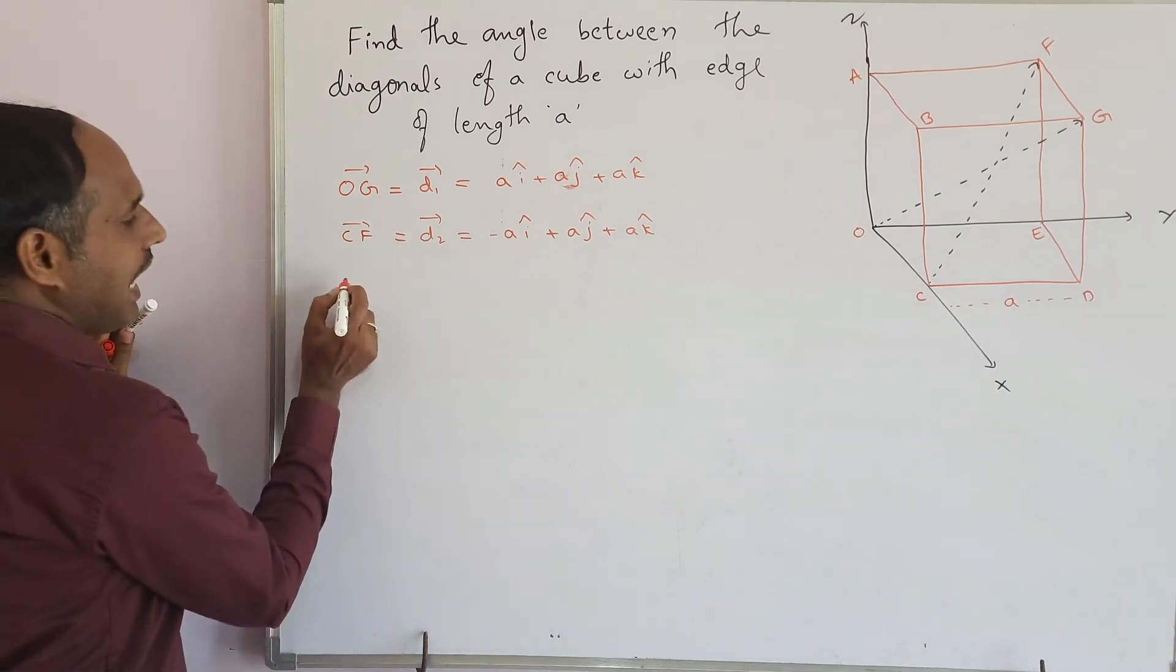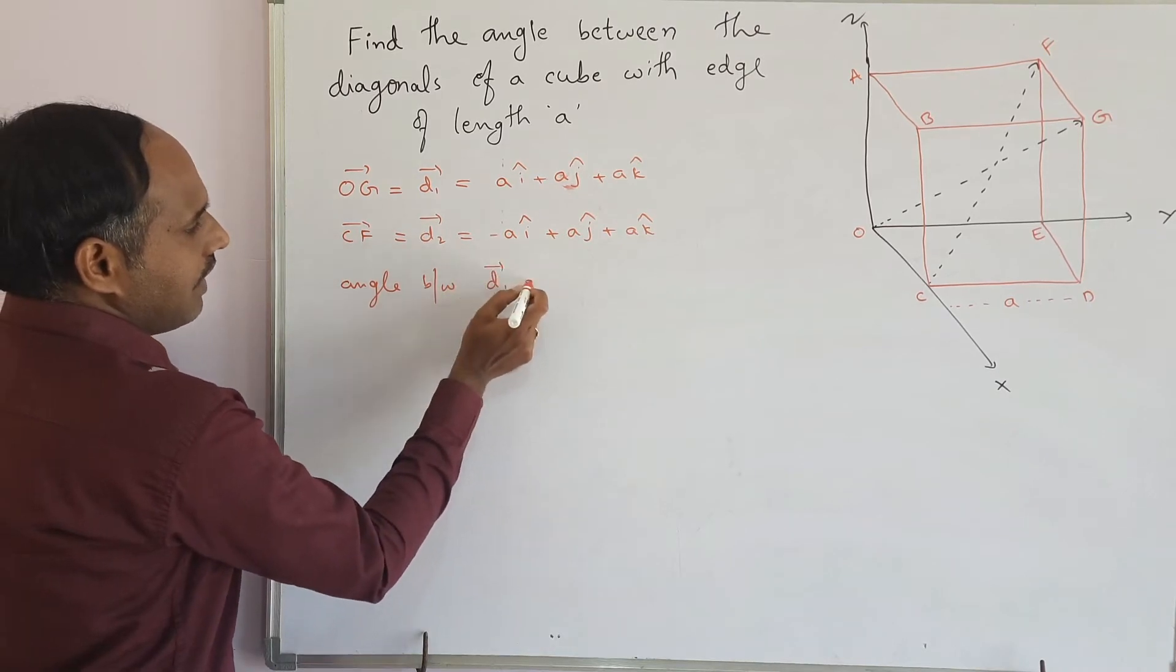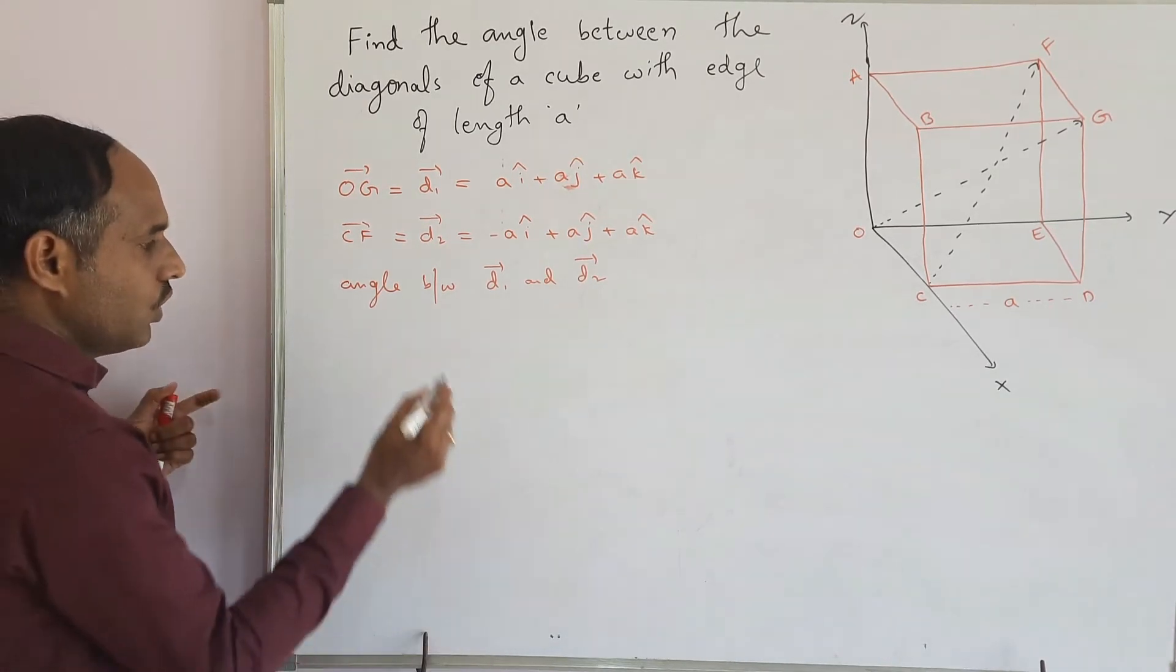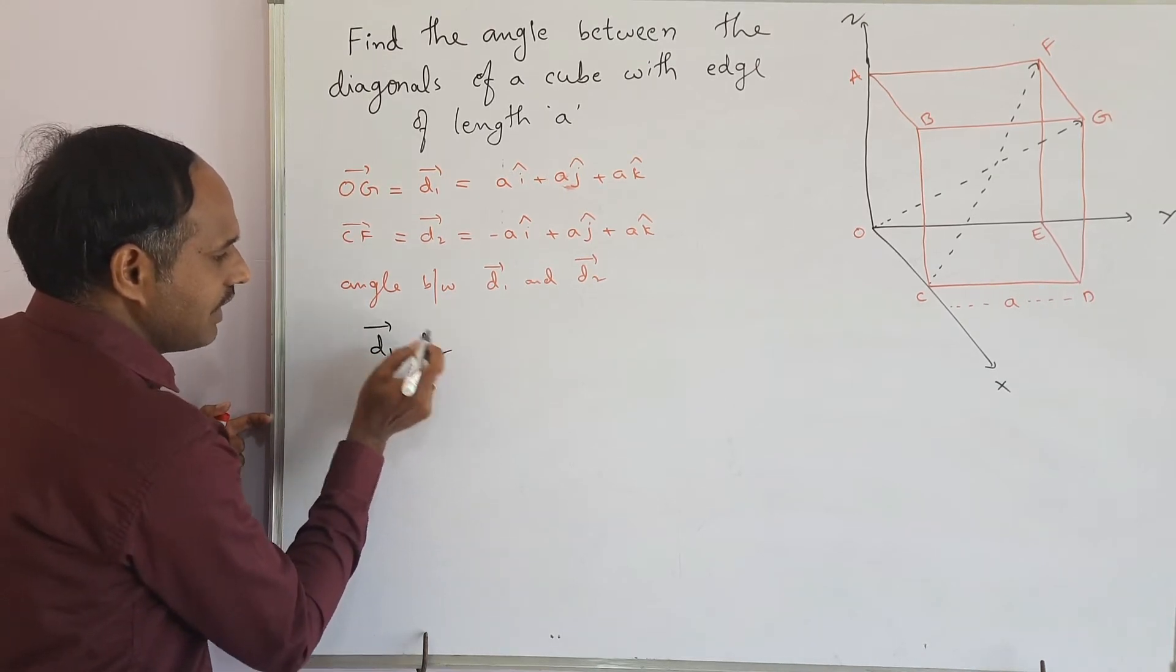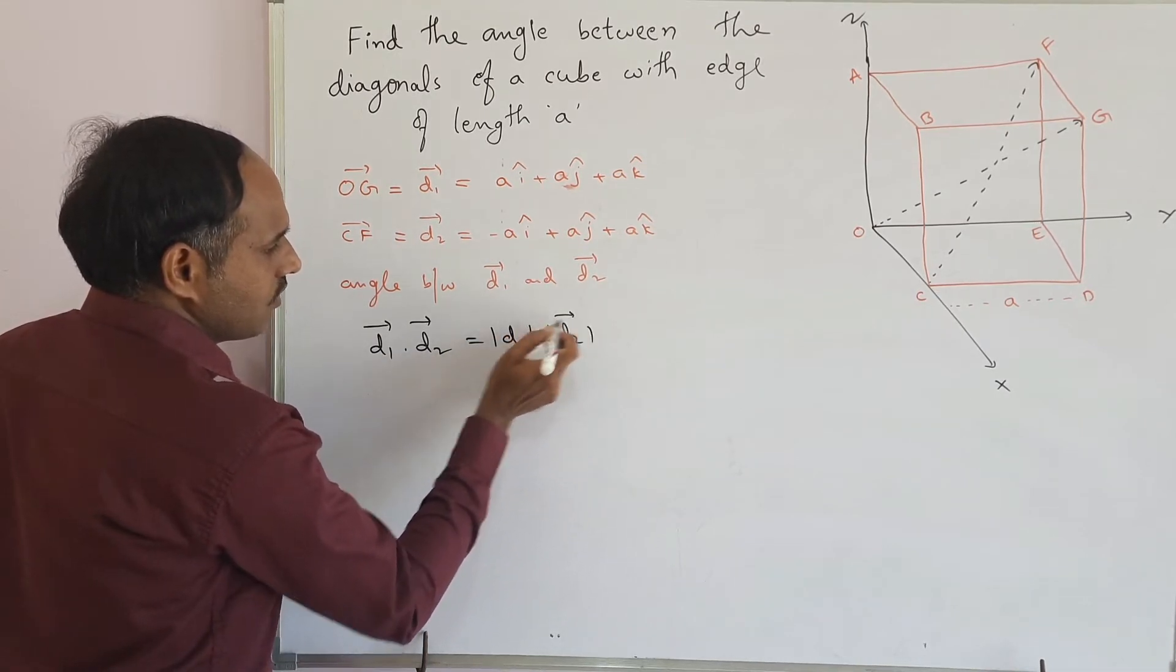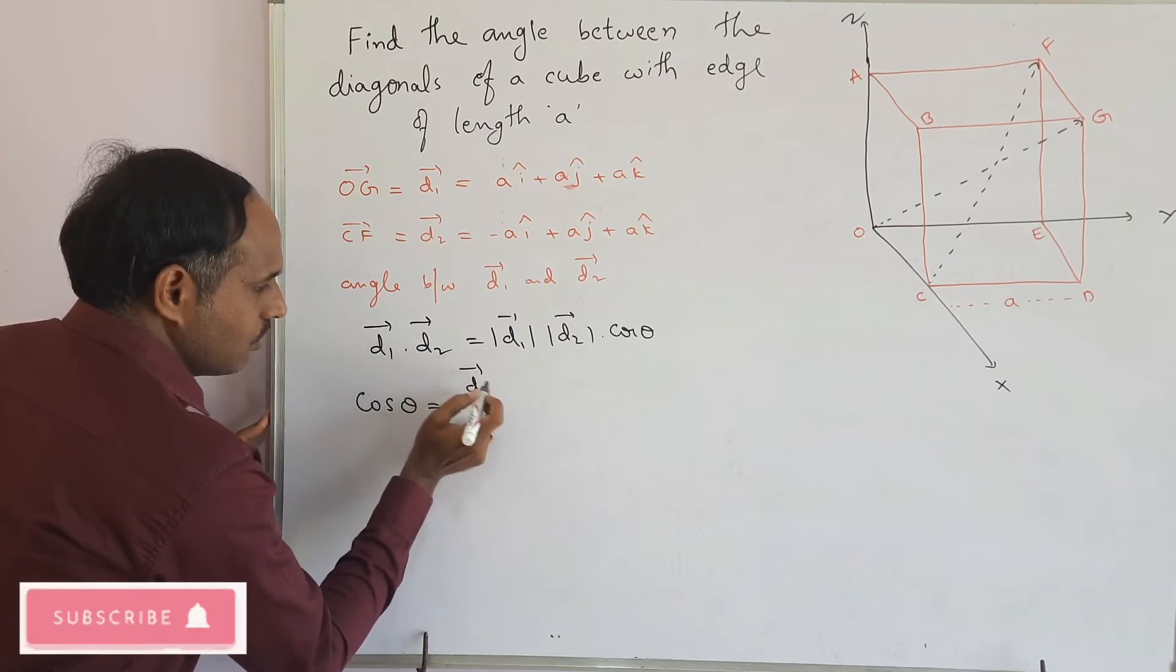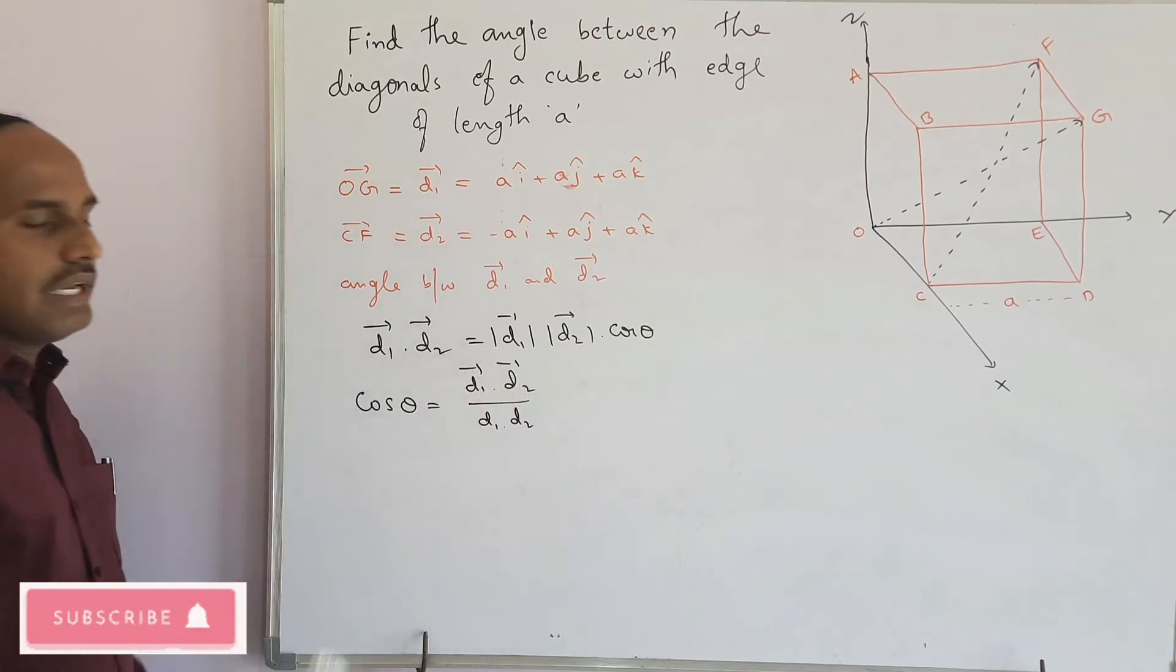Now the question is, angle between D1 bar and D2 bar. As D1 bar and D2 bar are the two vectors in the form of diagonals of this given cube, we know to find the angle between two vectors from dot product: D1 bar dot D2 bar equals mod D1 into mod D2 into cos theta. By using this, we can write the angle between them as cos theta equals D1 bar dot D2 bar by mod D1 into mod D2.